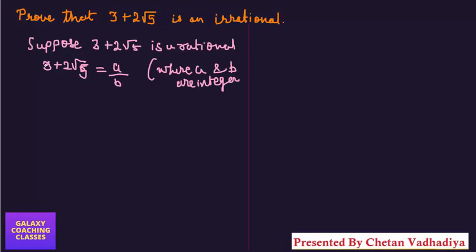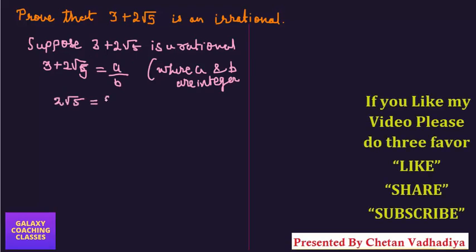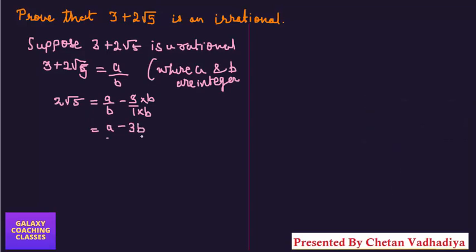Now one by one we need to take the natural numbers on the other side, the terms without root on the other side. Let me tell you. 2 root 5 equals to a upon b minus 3. Now we need to find out LCM so a minus 3b by b. And here it's 2 root 5.